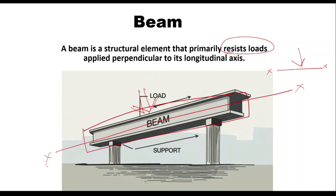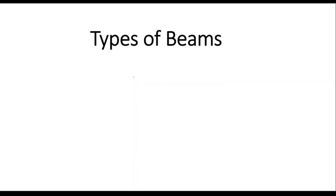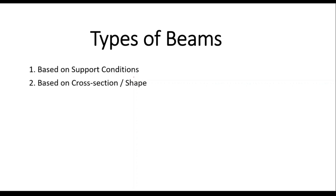Now let's see what are the types of beams we have in structural engineering. Beams have been classified into two categories: one is based on support conditions, and the second one is based on cross-section.